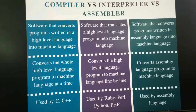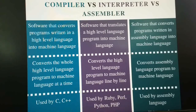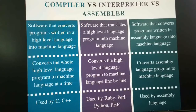An interpreter is software that translates a high-level language program into machine language line by line. It checks line by line, and if any error is present it will show a message. Examples include Ruby, Python, and PHP. An assembler is software that converts programs written in assembly language into machine language.